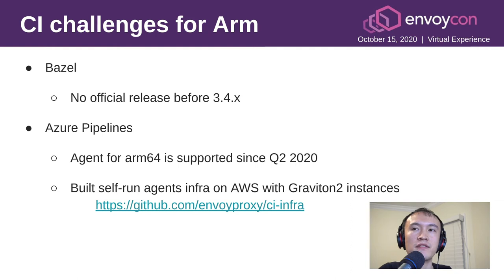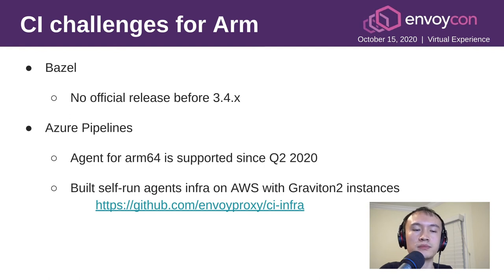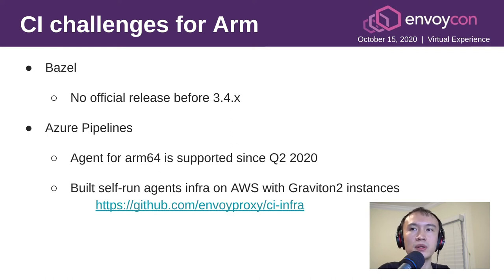The CI infrastructure basically sets up idle instances on AWS that wait for a job from GitHub, and then it works on the CI job from Azure pipeline. The code is in the CI infra repo, and it's very simple.